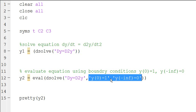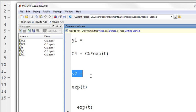y(0) is equal to 1, y of negative infinity is equal to 0. And then we can look at our command window and we'll see y2 is equal to exponential of T. So obviously C4 was equal to 0 and C5 was equal to 1.